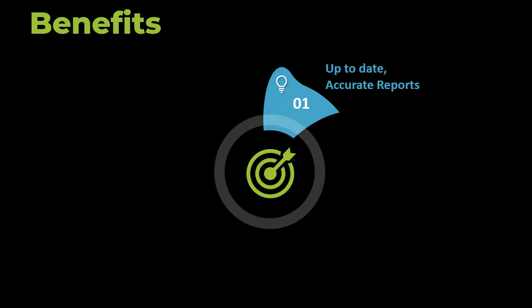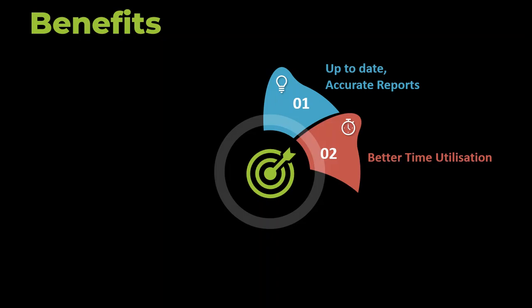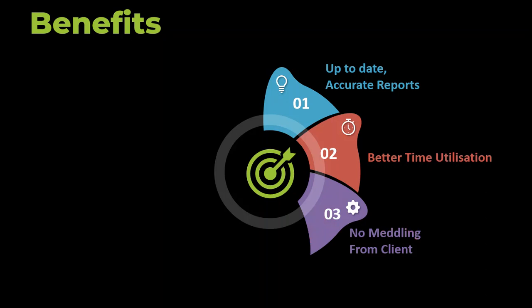Let's sum everything up and look at the benefits of automating the campaign reports. The first is obviously you get up-to-date accurate reports — we already discussed how human intervention might result in errors. The next is better time utilization, which doesn't need further discussion. Third, there is no meddling from the client — a very important point. Usually when clients are not happy with campaign performance, they ask you to give them access to the ads dashboard, and marketers obviously yield to this request.